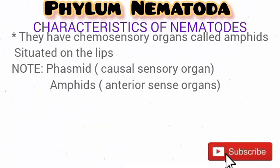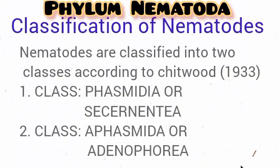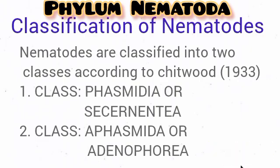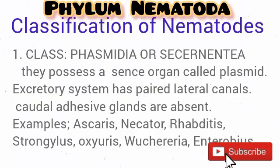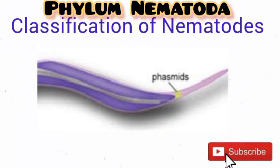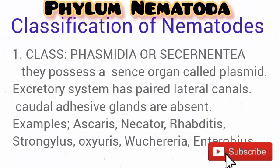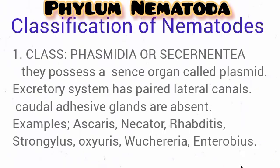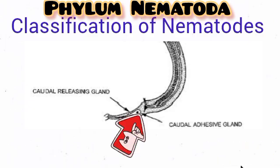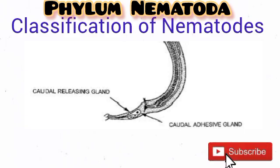Let's talk about the classification of nematodes. Chitwood classified nematodes into two classes: Phasmidia and Aphasmidia. Note that Phasmidia is also regarded as Secernentea, while Aphasmidia is also regarded as Adenophorea. Regarding Phasmidia: as you can see from the diagram, they possess phasmids on their posterior side. Most Phasmidia are parasitic, though they possess free-living species. They lack caudal adhesive glands — you can see the caudal adhesive gland in the diagram; in Phasmidia, they actually lack this organ.